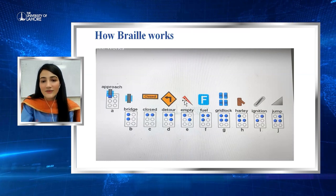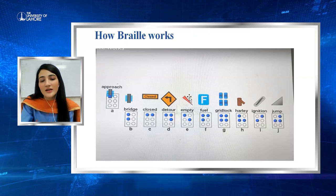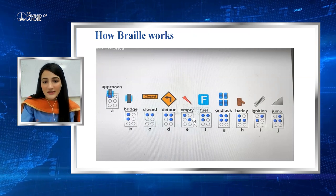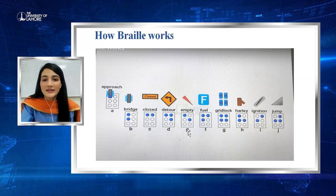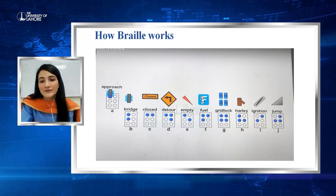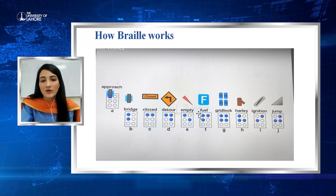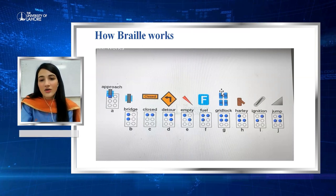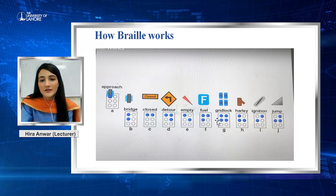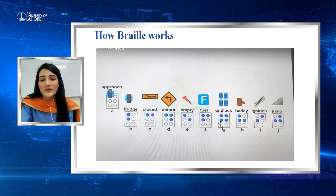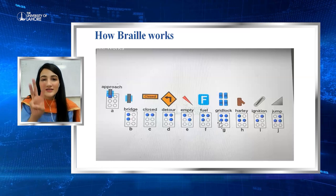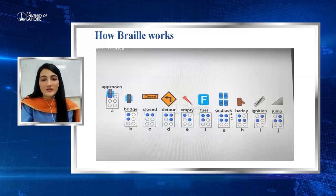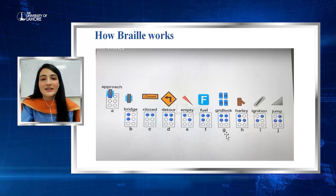For 'fuel' (F), dots 1, 2, and 4 are raised. For 'gridlock' (G), four dots are raised: 1, 2, 4, and 5. Because the A to J pattern uses only the top four dots, we raise dots 1, 2, 4, and 5 — this is the key of G.